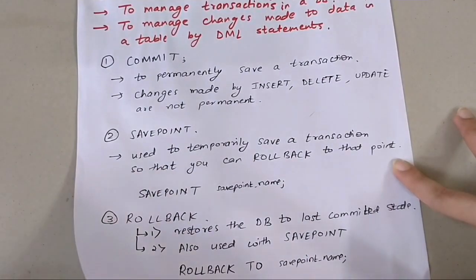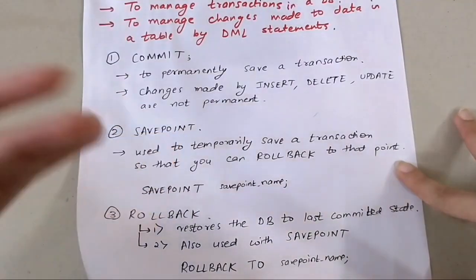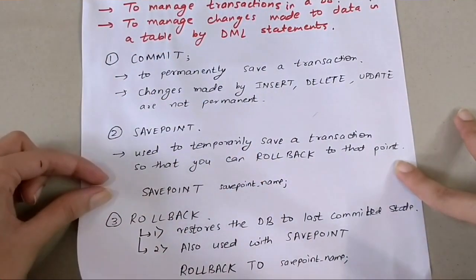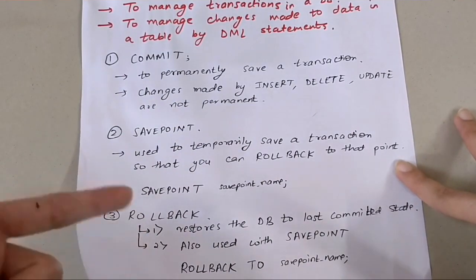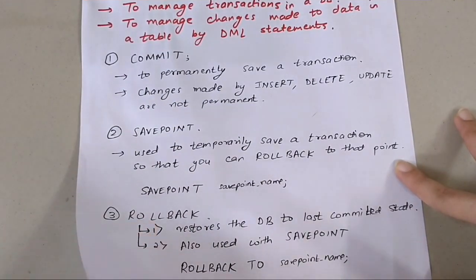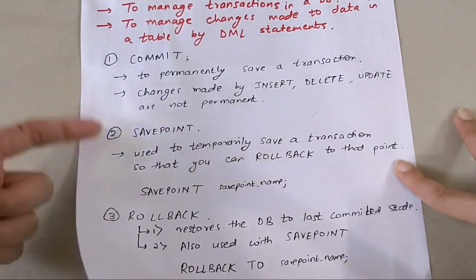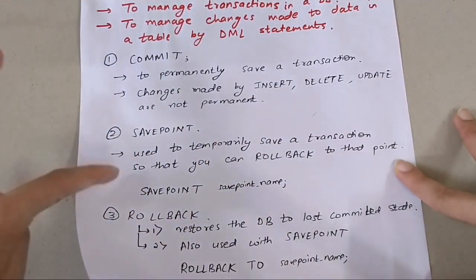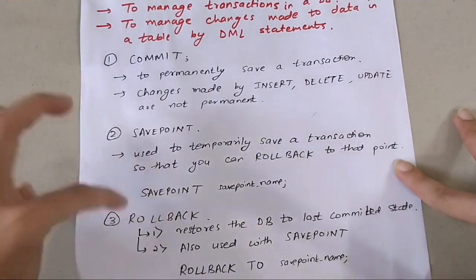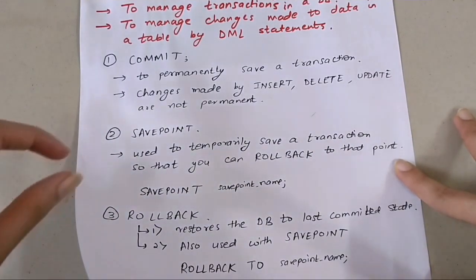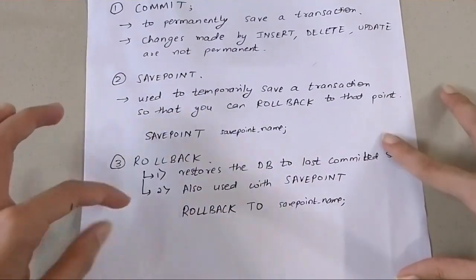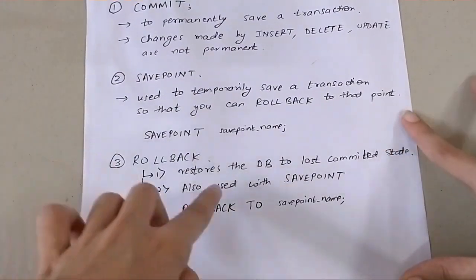The second TCL command is SAVEPOINT. It is used to temporarily save a transaction so that you can roll back to that point later. If you make changes and then make a mistake, you can roll back to the savepoint and restore the values to what they were before it. Syntax: SAVEPOINT savepoint_name.